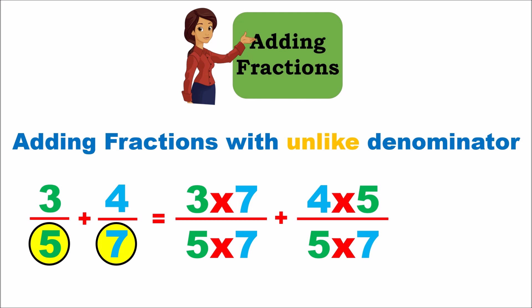For the second fraction, we multiply the numerator 4 by the denominator of the first fraction, which is 5, giving 4 times 5. The denominator is 7, and since we multiplied the numerator by 5, we also multiply the denominator by 5, giving 5 times 7. Now both fractions have the same denominator — 5 times 7 equals 35 — so now we can add them just like we did in the like-denominators example.